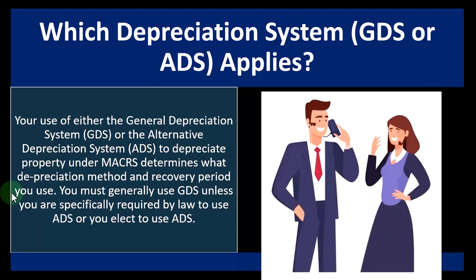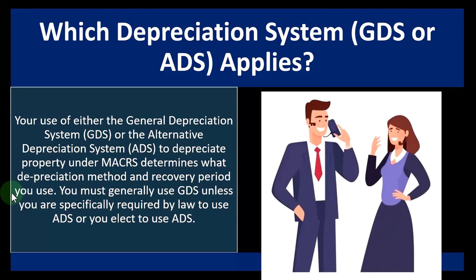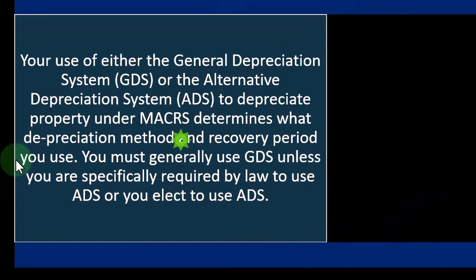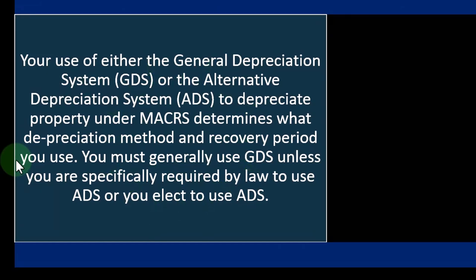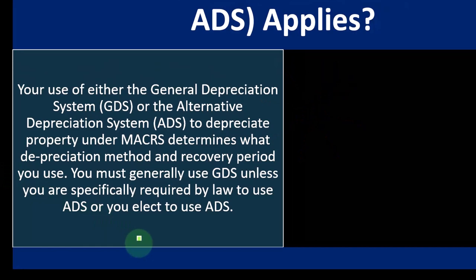Which depreciation system, GDS or ADS, applies? Your use of either the general depreciation system, otherwise known as the GDS, or the alternative depreciation system, the ADS, to depreciate property under MACRS determines what depreciation method and recovery period you use. You must generally use GDS unless you are specifically required by law to use ADS or you elect to use ADS.